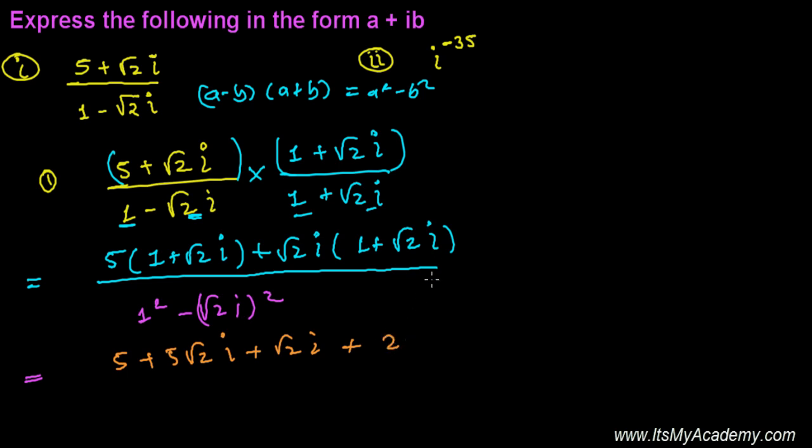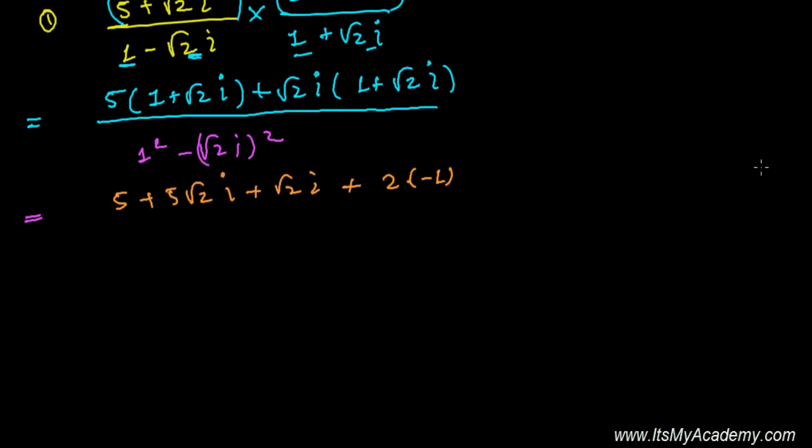It's -1 divided by 1 minus (√2)² which is 2, and i² is again -1.